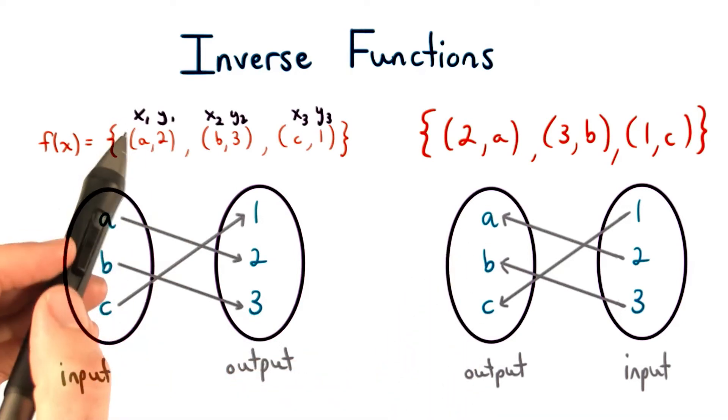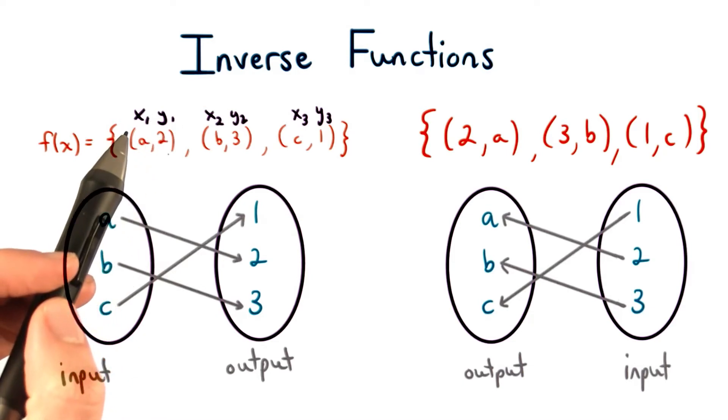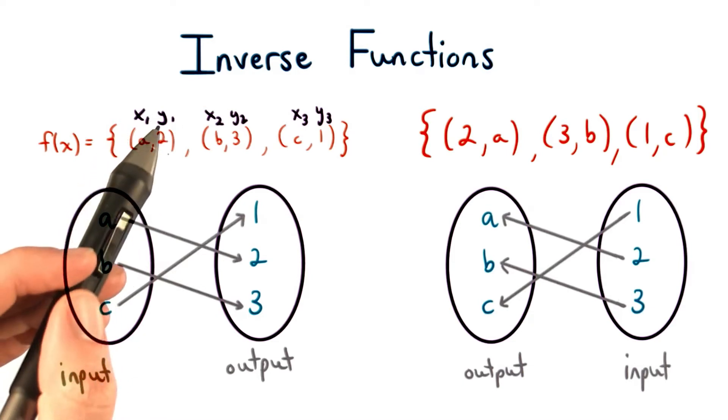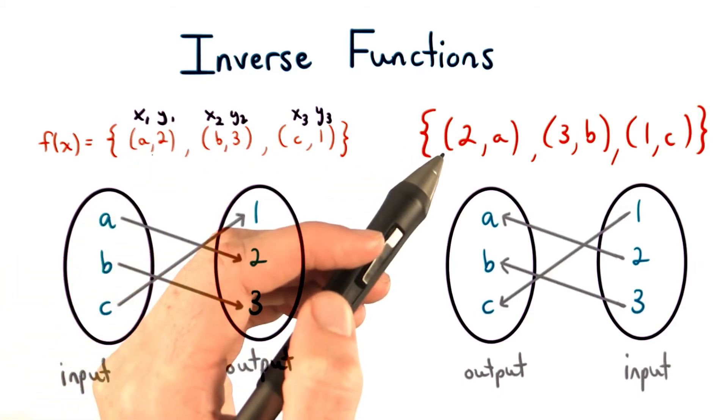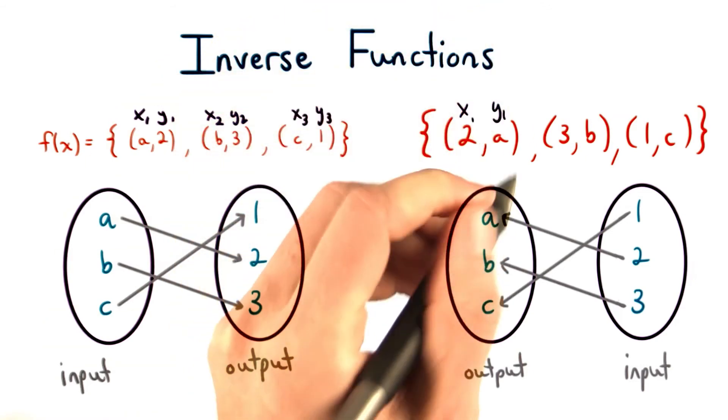Another way of thinking about it is that the x and y coordinate always switched. So here, for x, I had a, and for y, I had 2. In the inverse function, the x value is 2, and the y value is a.